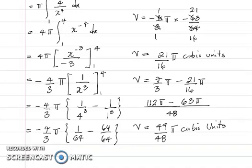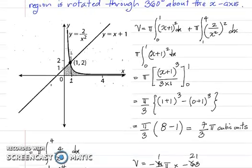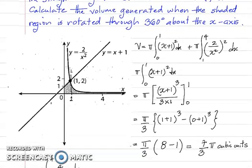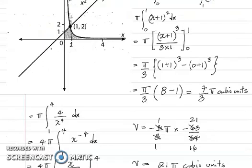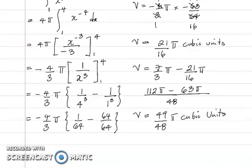The key thing to note with this question is that the area being rotated is not the area between two curves — it's the composite of the area under two separate curves. Rather than subtracting the volumes, we had to add them. Our final answer is 49π/48 cubic units.